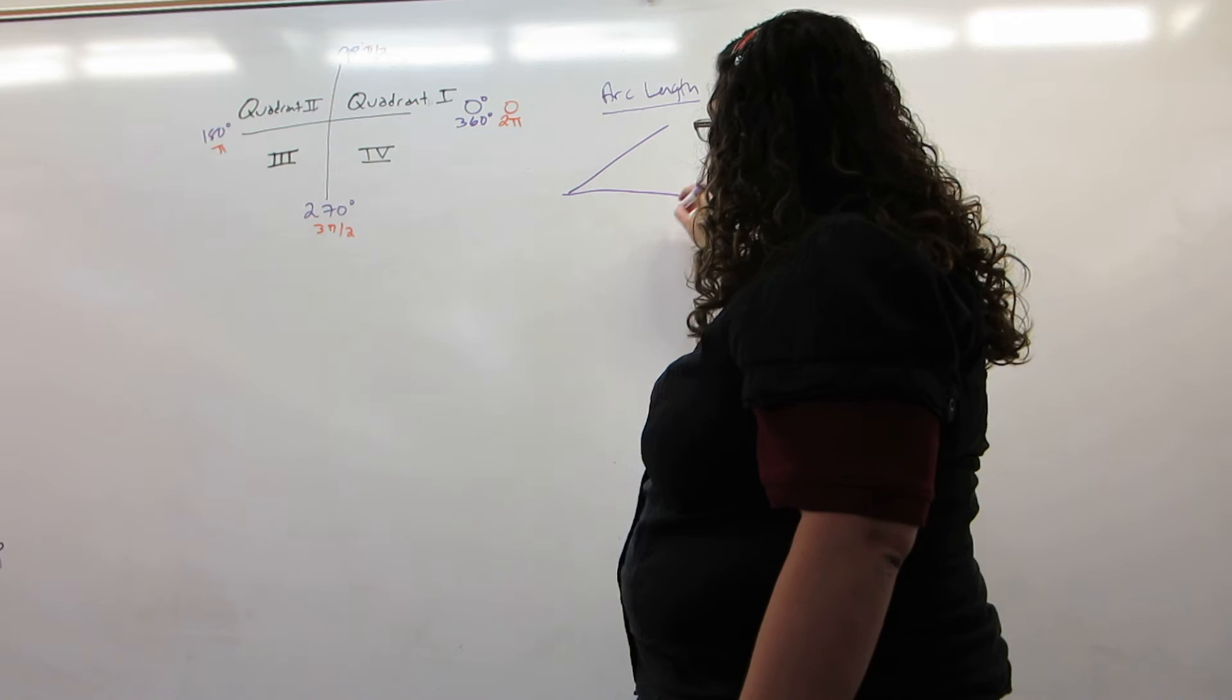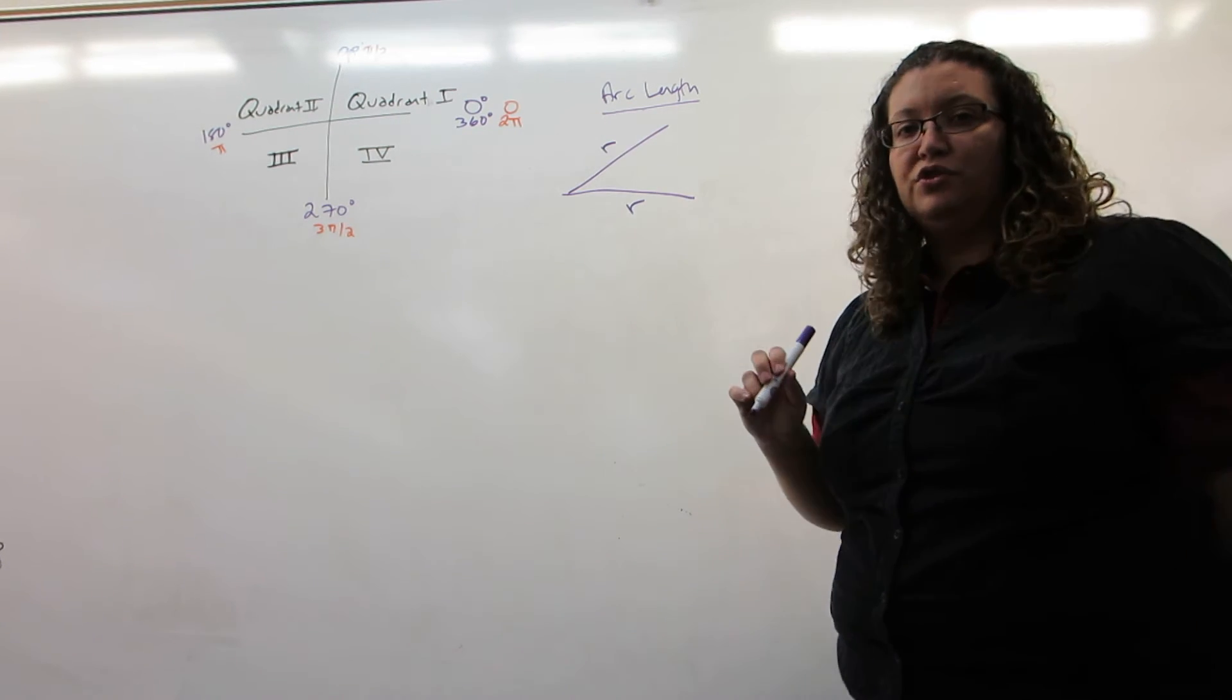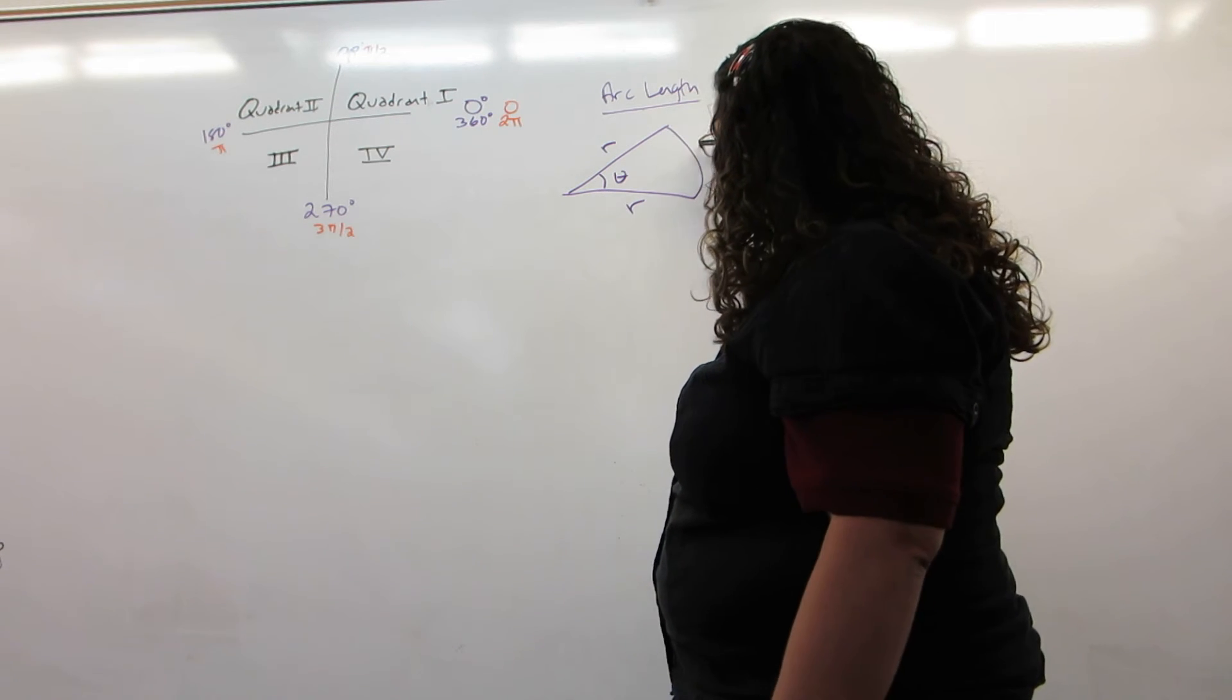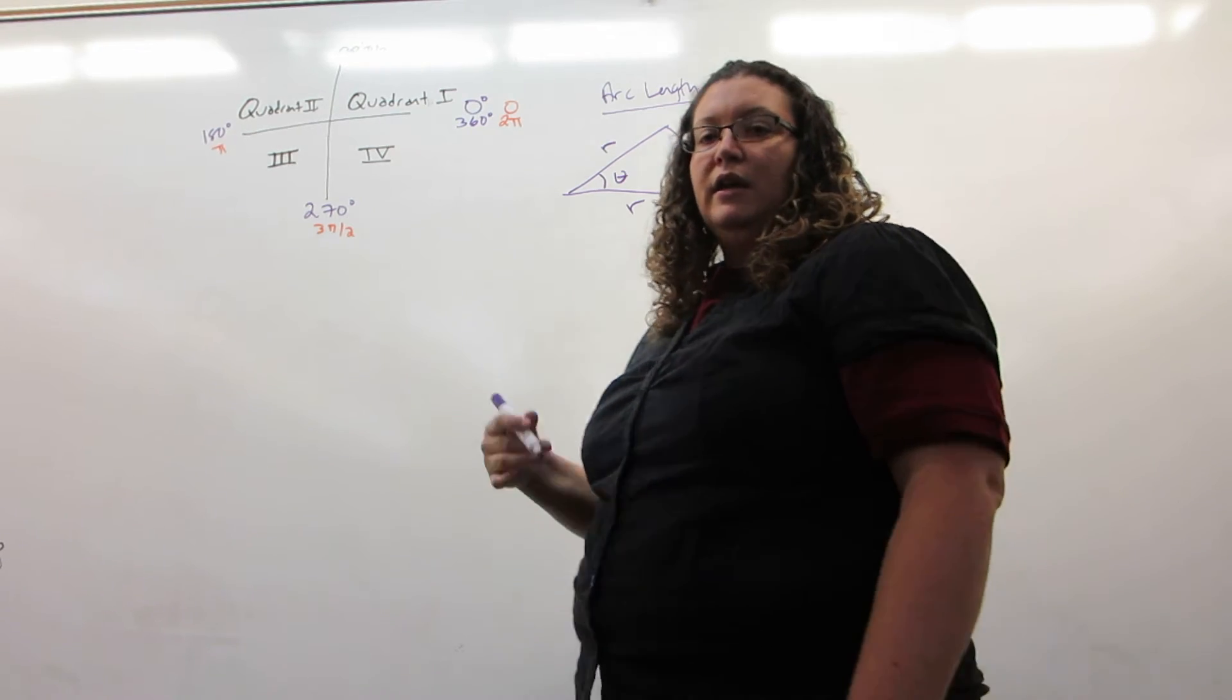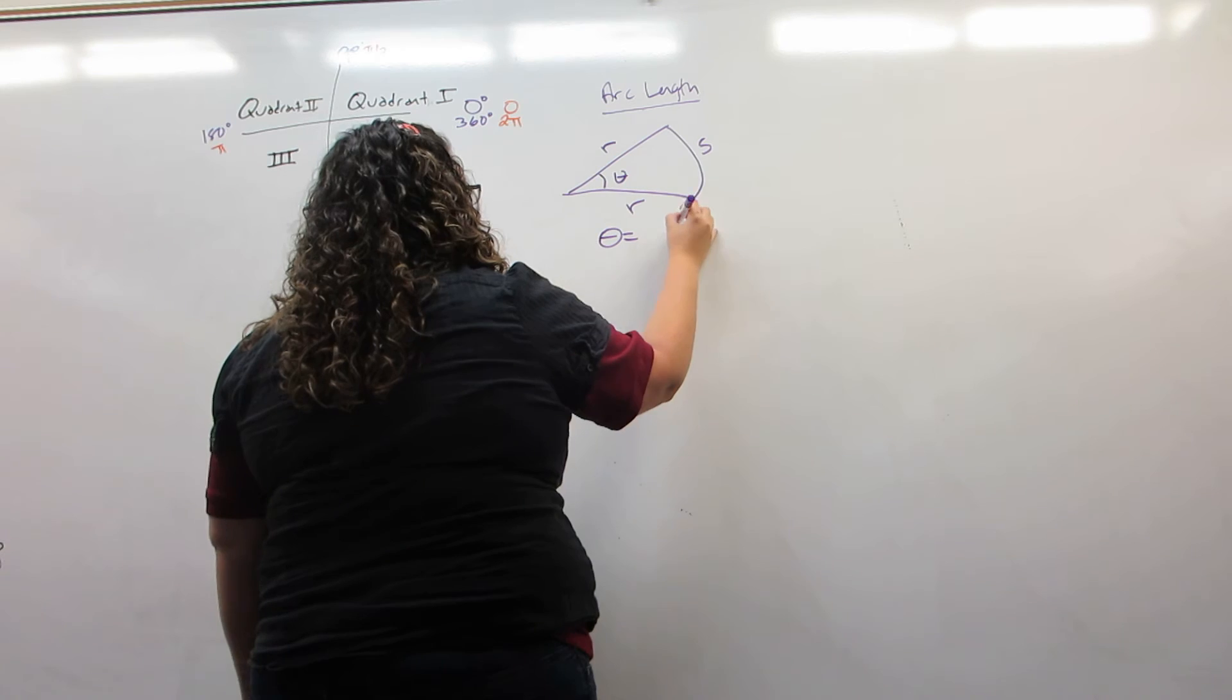If you remember, we had a terminal side, or initial side that turned into a terminal side of an angle theta, and the arc it cut out was called s, and that was the arc length. And if you remember the definition of radians was that theta equals s over r.